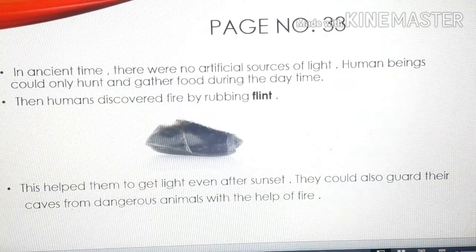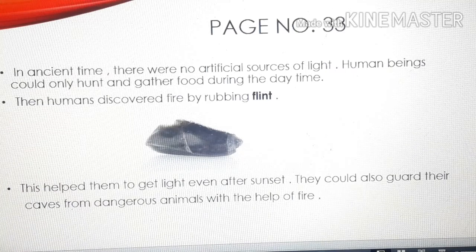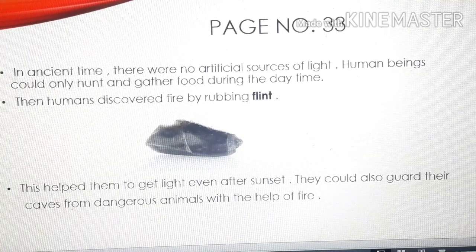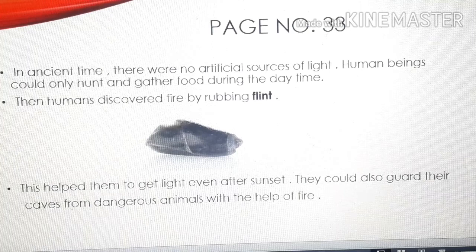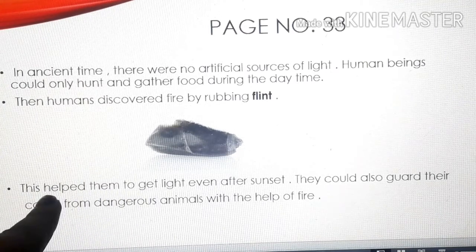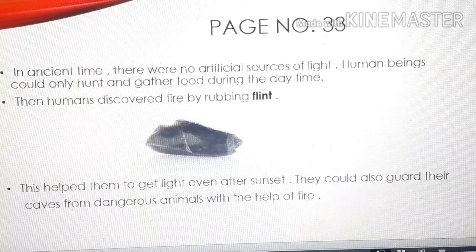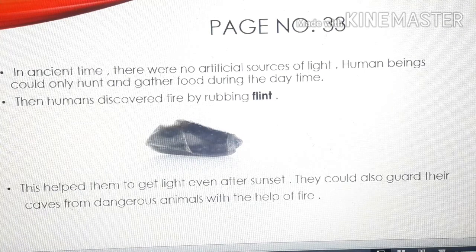Next, we studied about the discovery of fire as a source of light. In ancient times, there were no artificial sources of light. Human beings could only hunt and gather food during the daytime, because our eyes help us to see only in the presence of light. Then humans discovered fire by rubbing flint, which helped them to get light even after sunset and to guard their caves from dangerous animals.